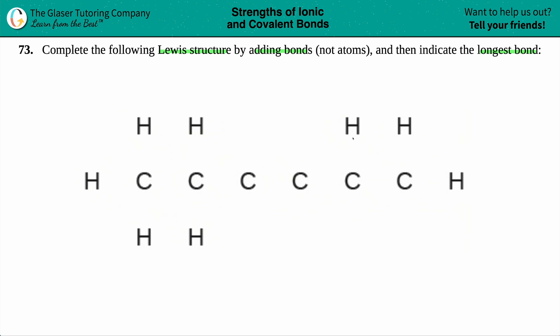There's tons of Lewis structures on this channel if you need more guidance. One key rule: whenever you have a hydrogen atom, they only can have one bond. Hydrogens will never have double bonds or triple bonds.